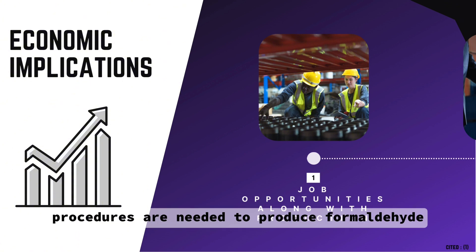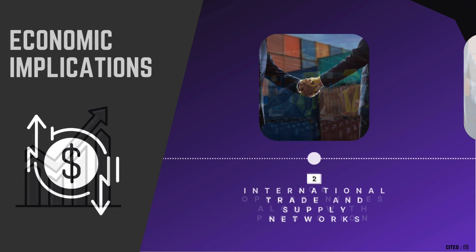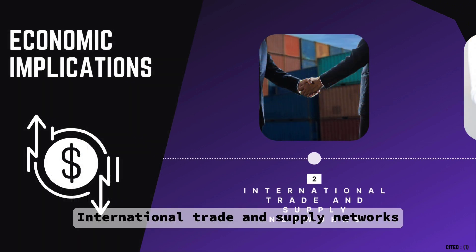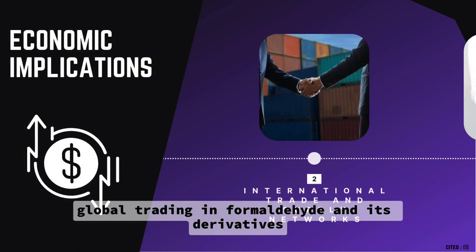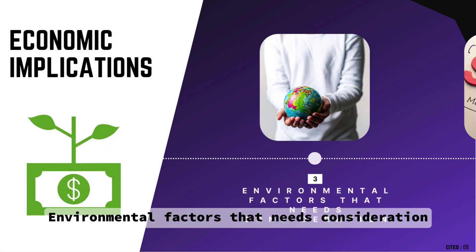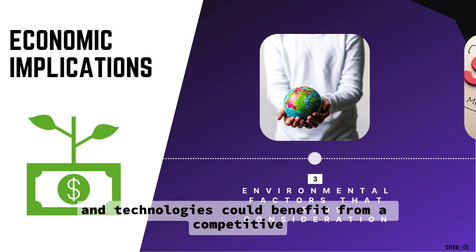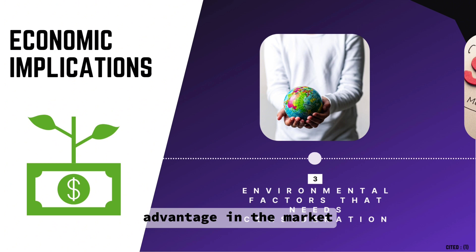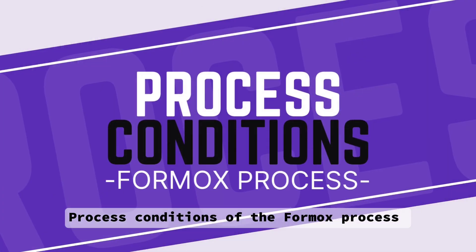The economic implications of formaldehyde production include job opportunities, along with the need for skilled personnel and sophisticated chemical procedures. Global trading in formaldehyde and its derivatives affects worldwide supply chains, enabling the production of goods. Businesses that adopt eco-friendly practices and technologies could benefit from a competitive advantage in the market.